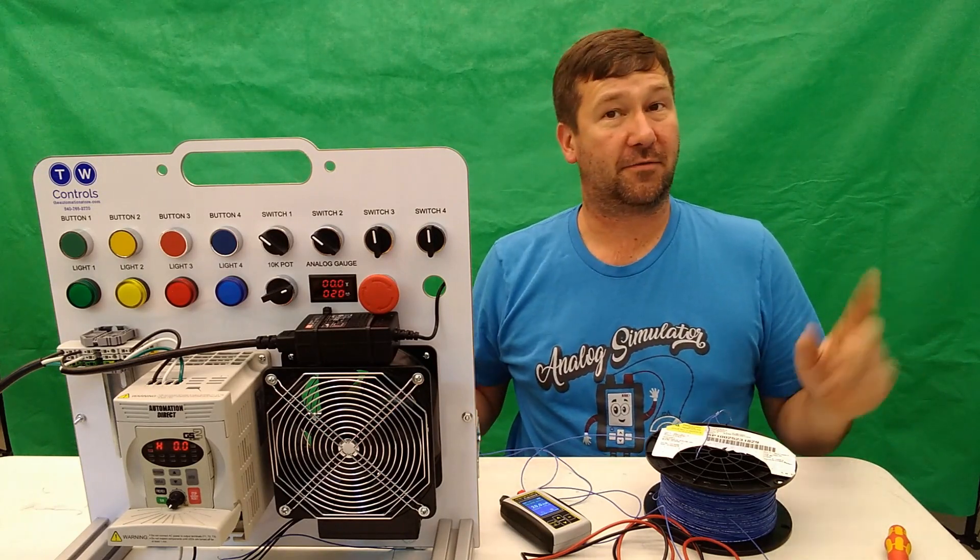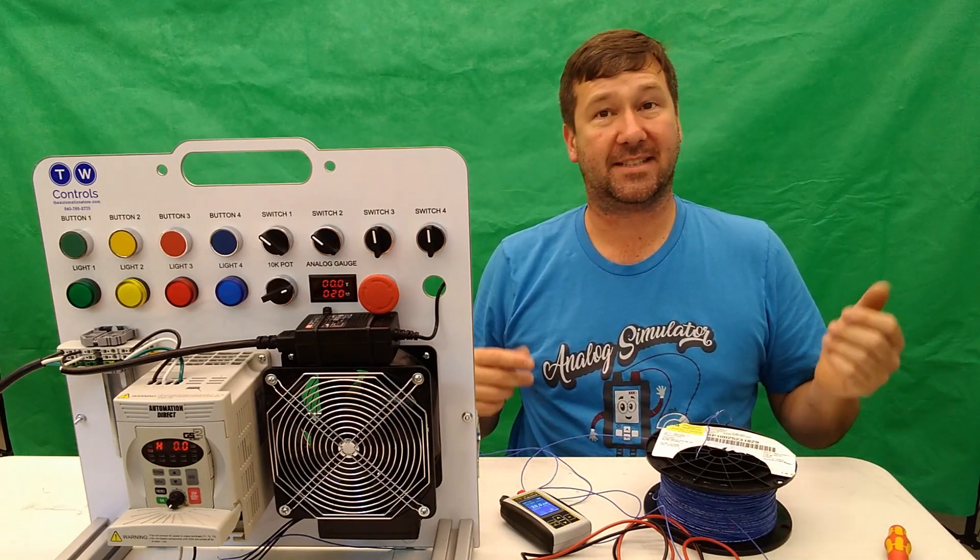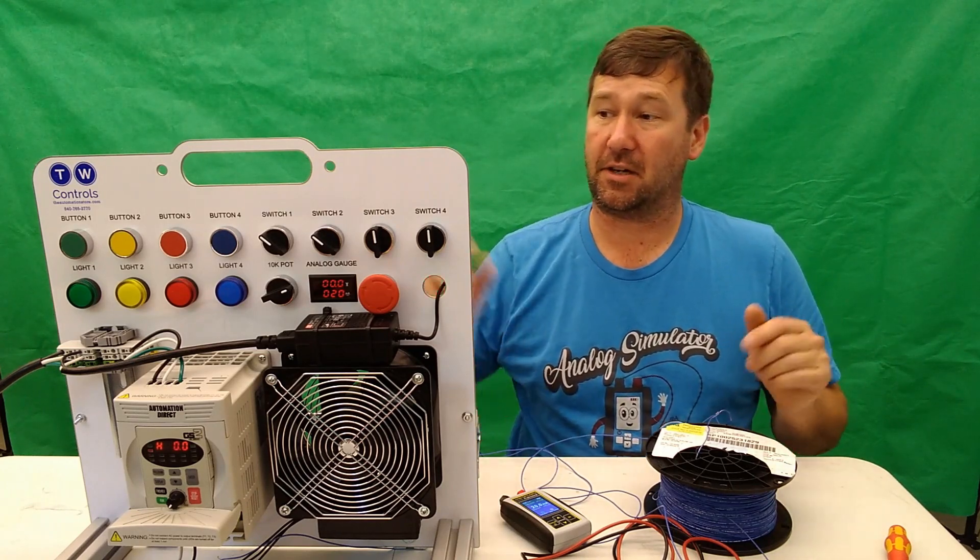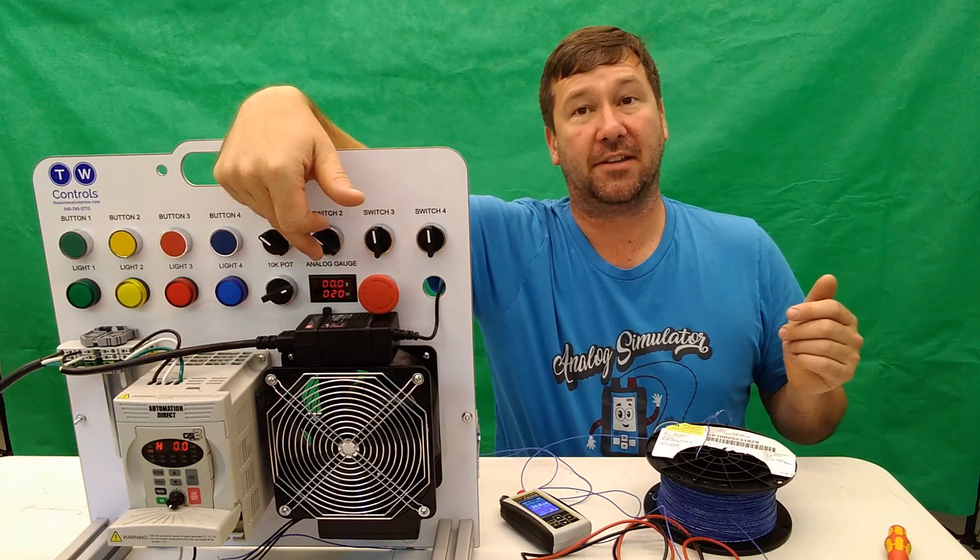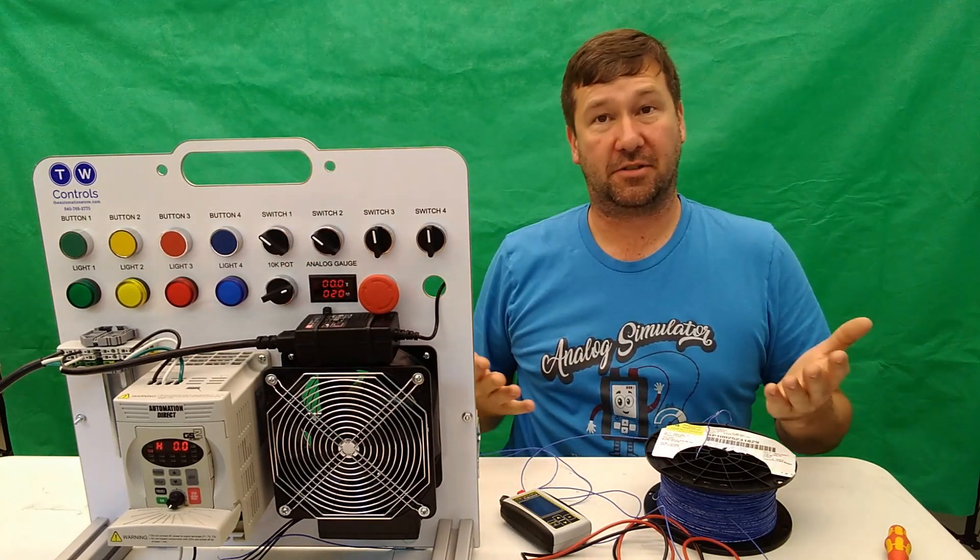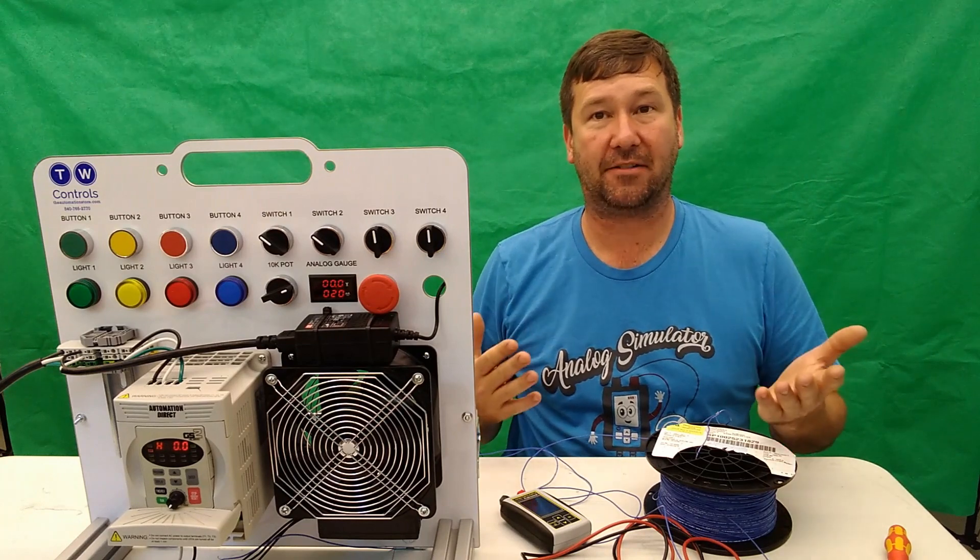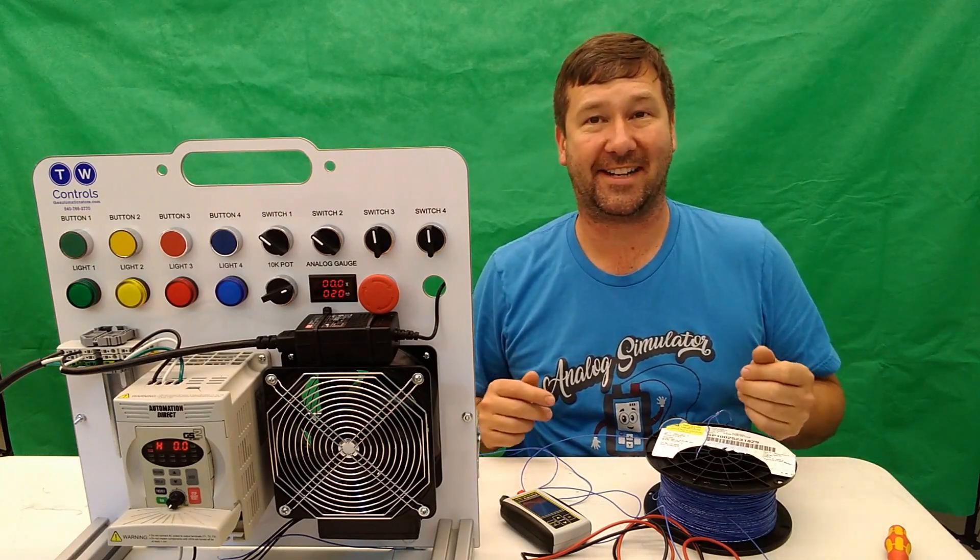I hope this video has been helpful. Feel free to ask any questions in the comments. In the next video, we're going to start wiring analog signals. So we're going to wire our potentiometer here both to the meter that's beside of it and also to a PLC input and start understanding exactly how to make these circuits work. Till next time.